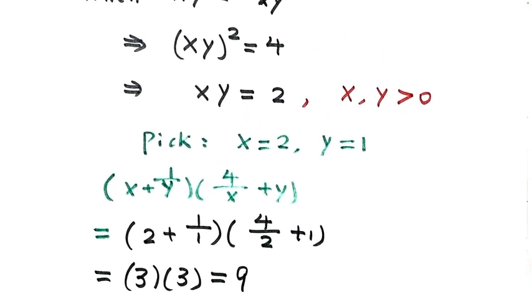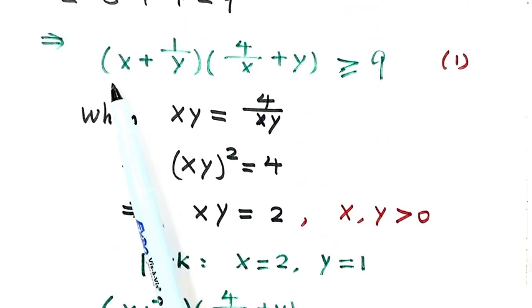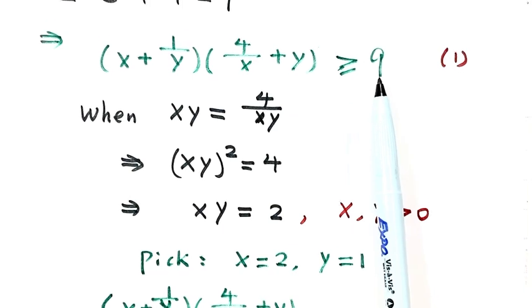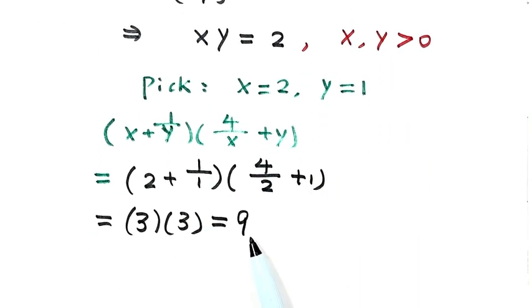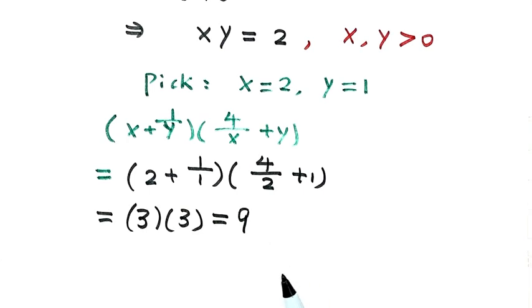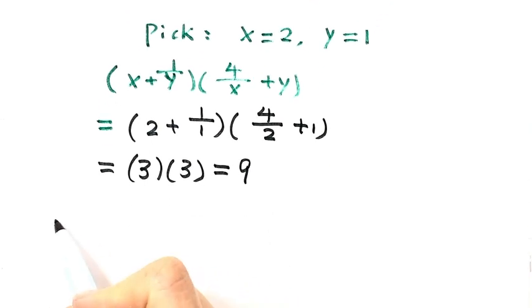So see, first we proved this expression is bigger than or equal to 9. So now we find that one point so the expression equals 9. So that means the minimum value is reachable. So then we have the minimum value.